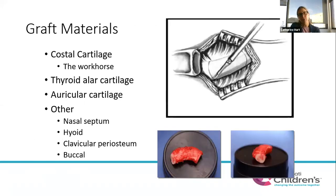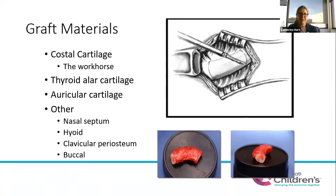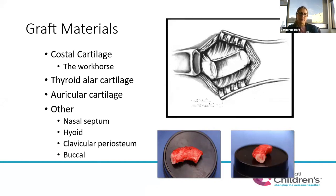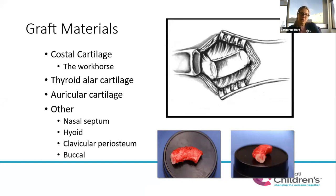Costal cartilage from the rib is the most commonly used graft material — it's the right size, the most durable, and that's why it's preferred. Thyroid cartilage can be used as a primary source in younger children, but there's less role for it as kids get older. In rare instances, auricular cartilage can be used, though it's not as thick or hardy. Other options exist but are not the typical go-to.